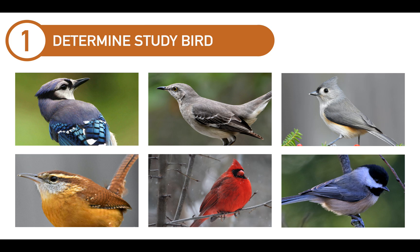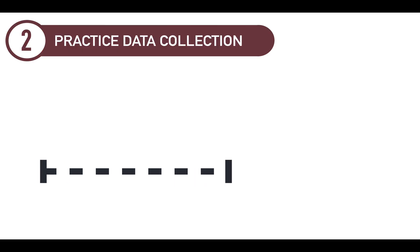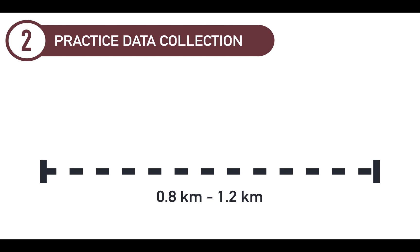When you go to your park, I want you to actually go through the data collection process so you can experience what it's going to be like for real. When we talk about data collection, you're going to be walking a transect following the inland strip method. The transect should be between 0.8 and 1.2 kilometers. While at the park, try to find locations — whether trails or slight trails — where birds are most active. For your first practice data, pick a location, test it out, but also walk around the park to see what other locations might be like. You might want to change your transect if you didn't hear as many birds as expected.